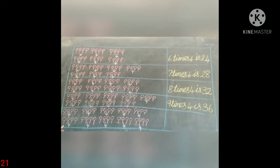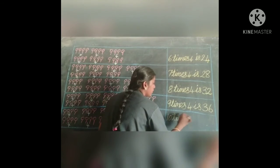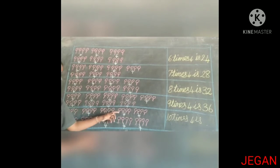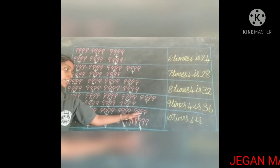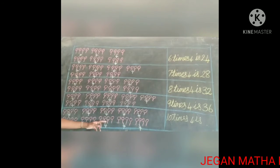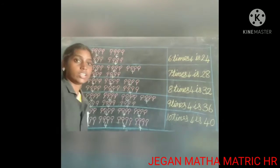Now look at the last box. How many 4's are there? Count: 1, 2, 3, 4, 5, 6, 7, 8, 9, 10 — ten times. So write here: 10 times 4 is... Count all lollipops: 1, 2, 3, 4, 5, 6, 7, 8, 9, 10, 11, 12, 13, 14, 15, 16, 17, 18, 19, 20, 21, 22, 23, 24, 25, 26, 27, 28, 29, 30, 31, 32, 33, 34, 35, 36, 38, 39, 40. So 10 times 4 is 40.